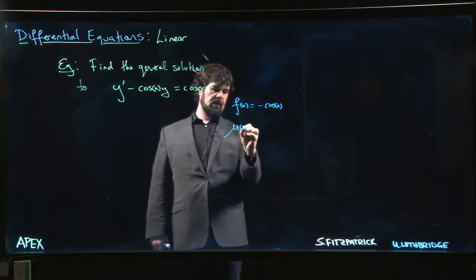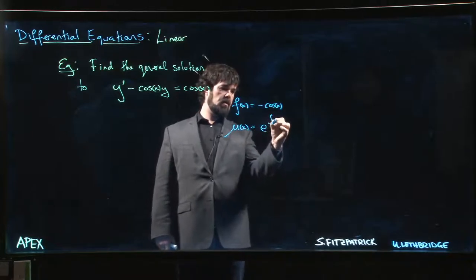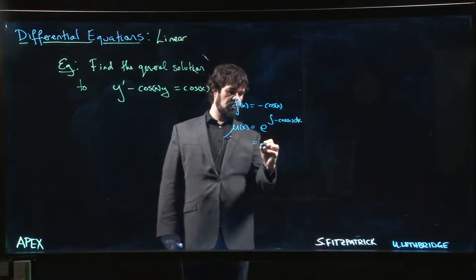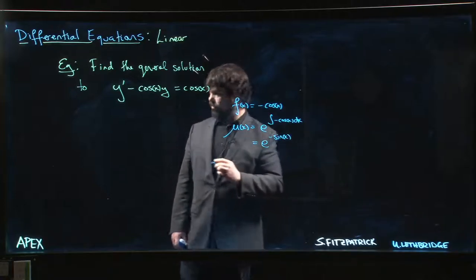So our integrating factor is e to the integral of minus cosine x dx, which gives me e to the minus sine x.